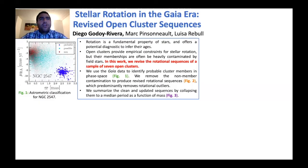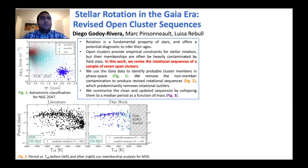Hello, I am Diego Rodoy Rivera from the Ohio State University. Stellar rotation is a fundamental property of stars, and many of the constraints that we have for rotation come from open clusters. Unfortunately, the memberships of these systems are often heavily contaminated by field sources. In this work, we revise the rotational sequences of a sample of open clusters by using the Gaia data to identify the probable cluster members in astrometric phase space. This is illustrated in Figure 1, where we show the probable cluster members in blue. We then use this to remove the non-member contamination from the rotational sequences of the clusters.